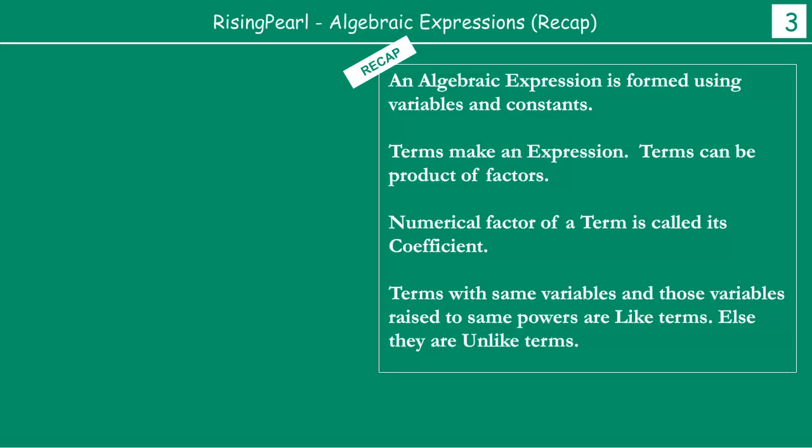Let's take maybe some more examples. So we know what expressions are - variables with constants, when we combine them we get algebraic expression. We've also seen that terms build an expression, they are the building blocks, and terms are product of factors. The numerical portion in this product of factors is called coefficient. Then we've seen what like terms are and what unlike terms are.